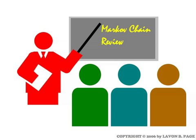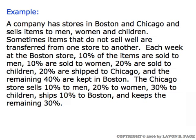In this final video, we're going to take a couple of examples and tie these ideas together — that is, look at multiple ideas in the context of the same example. We start with a company with stores in Boston and Chicago that's targeting sales to men, women, and children. When items sit for a while without selling, they shuffle them around between the stores, and we have data on how that shuffling occurs.